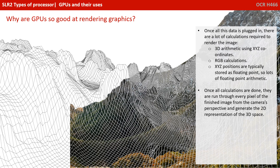Once all of this data has been plugged in, there would be a huge number of calculations required to render the finished image. We'd need to do lots of arithmetic based on the X, Y and Z coordinates, and lots of RGB calculations for the individual pixels. The X, Y, Z positions are typically stored as floating points, so there's an awful lot of floating point arithmetic needed.